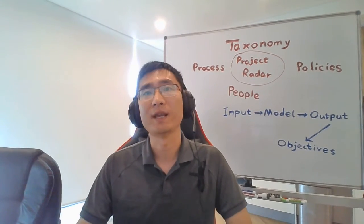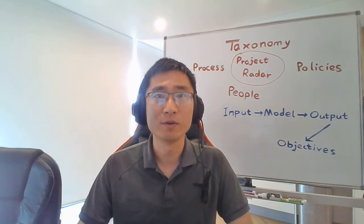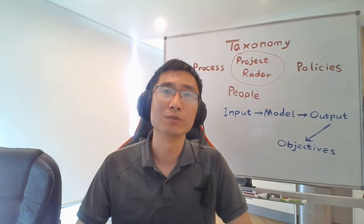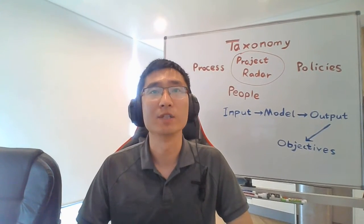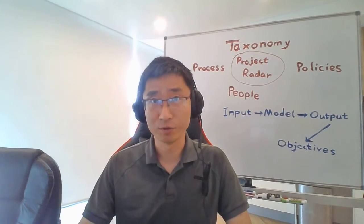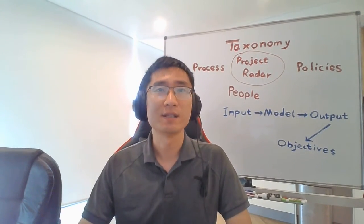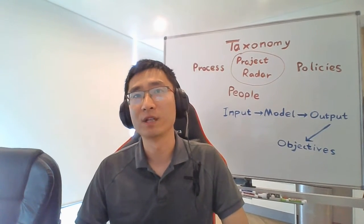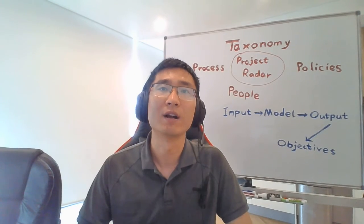Number two, the policies should be hierarchical and principle-based to be both useful and stable. Number three, people management should balance rules and culture to both discipline and motivate people. Number four, the process design should be parsimonious and automated for consistency and users' buy-in. And number five, the techniques should be modularized for synergy and smoother integration with our RMF.